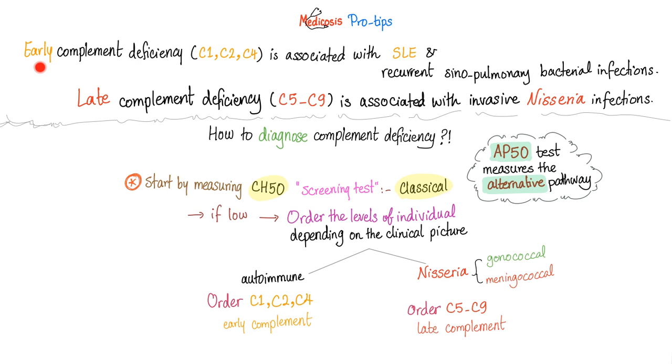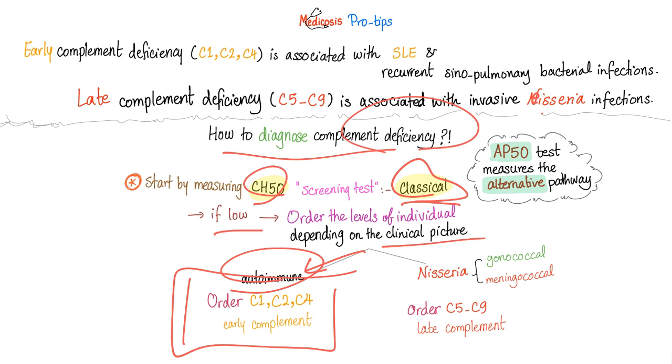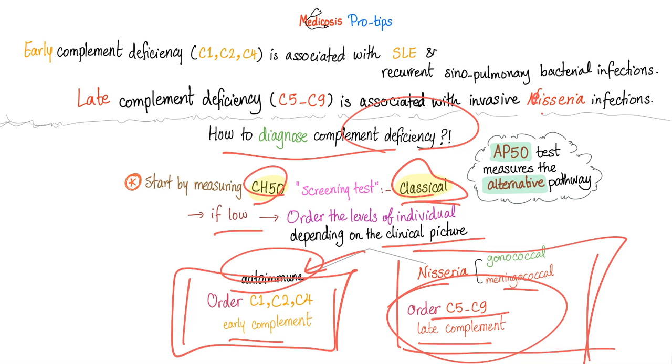Hypocomplementemia. If it's the early complement deficiency, it's associated with SLE. Late complement deficiency, C5 through C9, associated with invasive Neisseria infections, could be Neisseria gonorrhoeae or Neisseria meningitidis. How to diagnose complement deficiency? We start by measuring the CH50. It measures the classical pathway. If it's low, it means there is overactivation of the classical pathway, and let's go fishing. If the patient has clinical symptoms of autoimmune disease, let's order the early complement, C1, C2, and C4 proteins. If you suspect Neisseria infection, you order the late complement, C5 through C9. If they have autoimmune disease, C1, C2, C4 are going to be low.